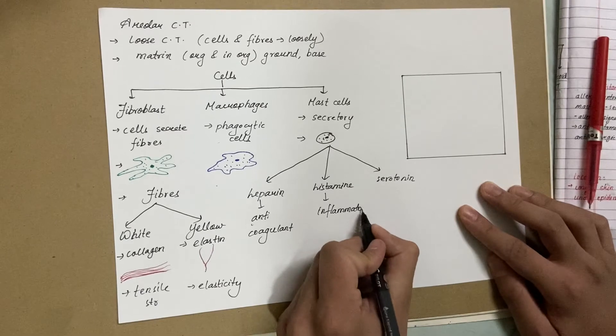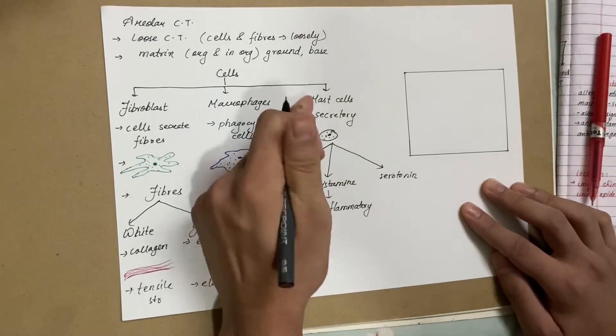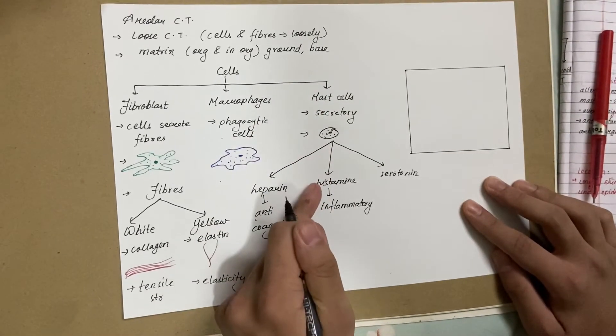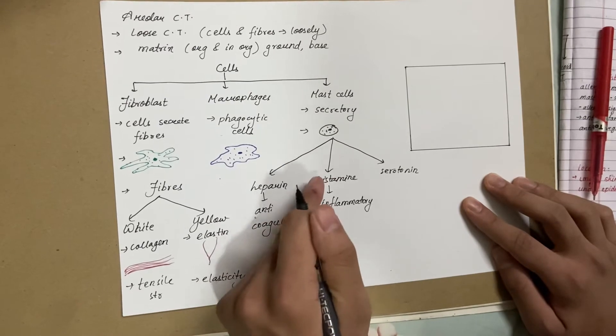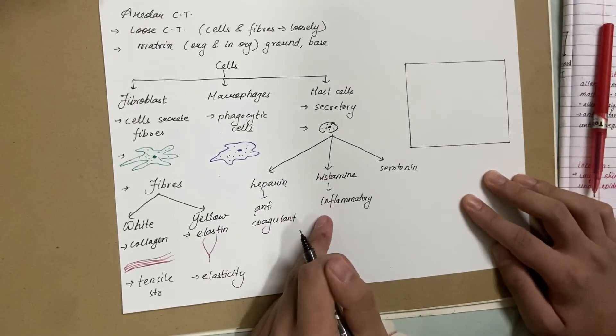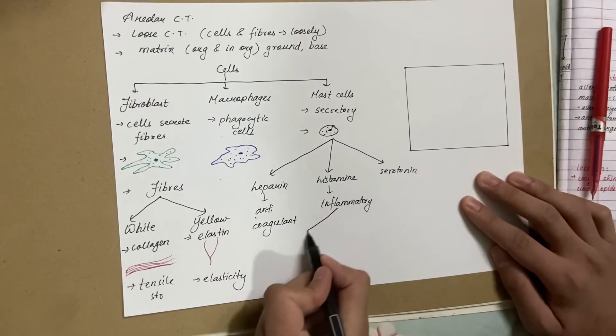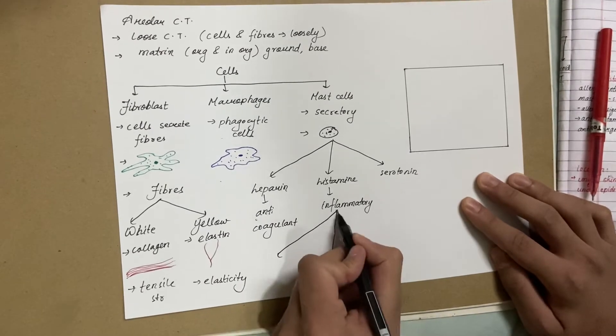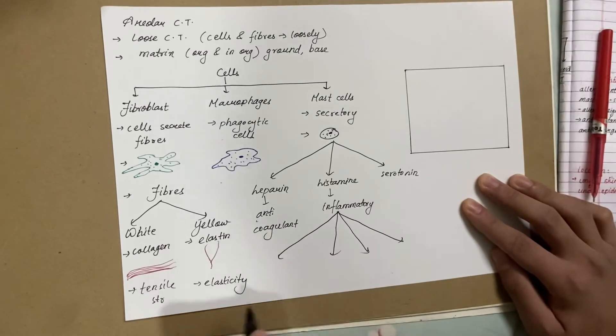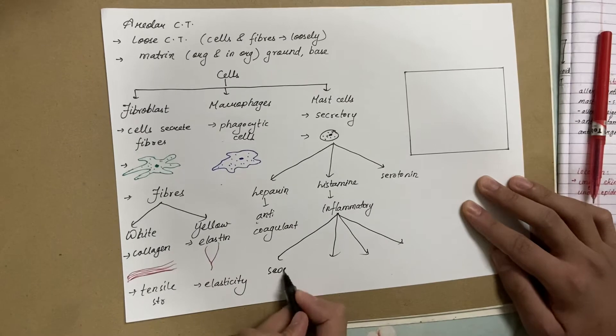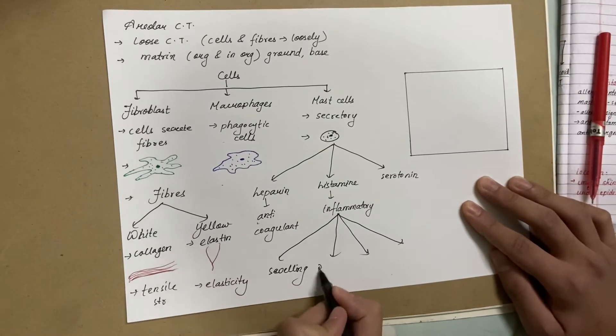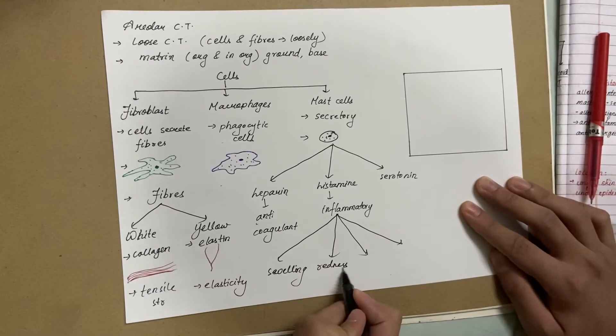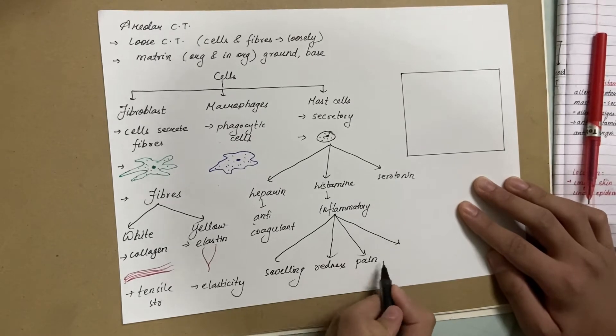Histamine shows inflammatory response. Whenever there is an allergic reaction, mast cells secrete histamine and as soon as histamine is secreted, there is inflammation on the skin. Inflammation is always categorized by four major features: there's always swelling, redness around the area, pain, and finally you can feel a little warmth around that area.